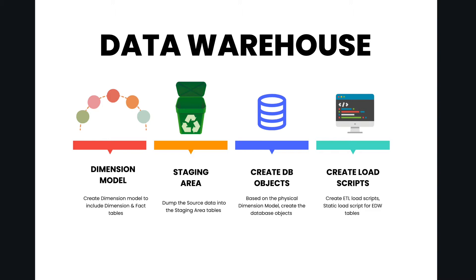Whatever data we are getting from the source we dump into tables in our staging area. After the staging tables are loaded, we create our database objects in the EDW layer, which are primarily the dimensions and fact tables. These tables are then loaded using staging area tables. Once the EDW tables are created we create a load script — it can be an ETL load script for daily run, incremental run, or a one-time load for static tables like date and time dimensions.